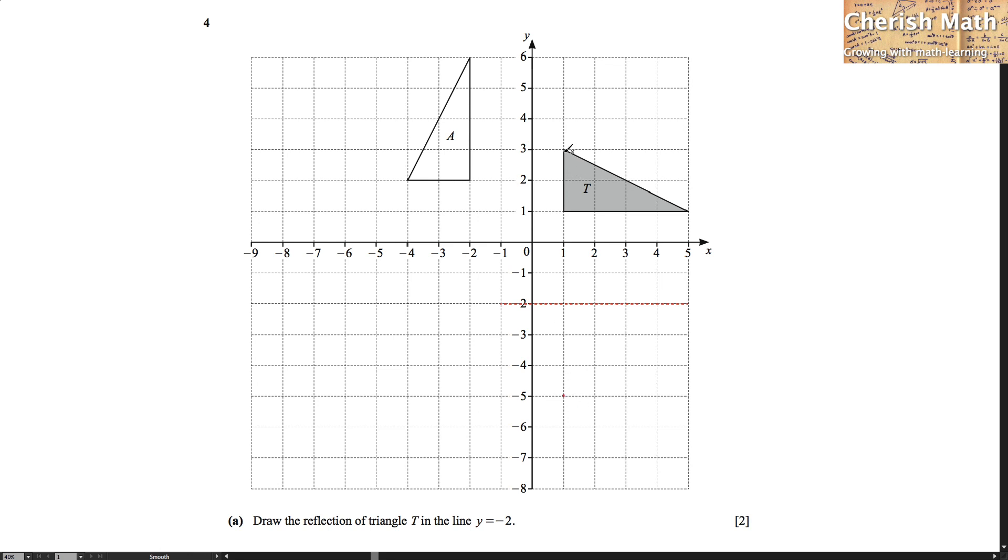And this vertex is one, two, three, four, five units away from y equals negative 2. So we count five from it: one, two, three, four, five. It is landed here.